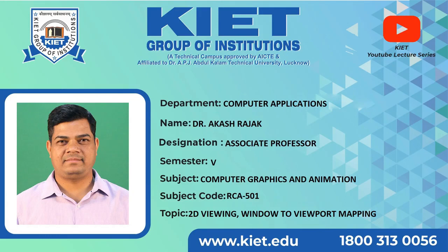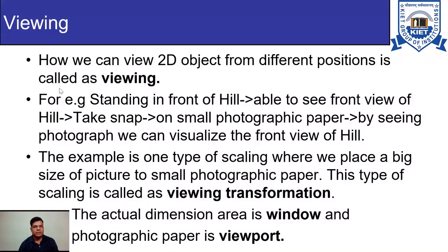In today's lecture I will discuss two-dimensional viewing and window to viewport mapping. Viewing can be defined as how we can view a two-dimensional object from different positions. For example, we have an image and we want to display that image on the screen — we are selecting some portion of the picture and displaying it on device coordinates, while initially the picture is on the world coordinates.